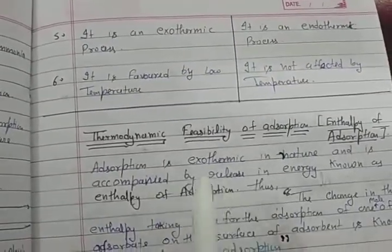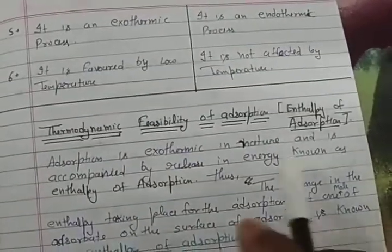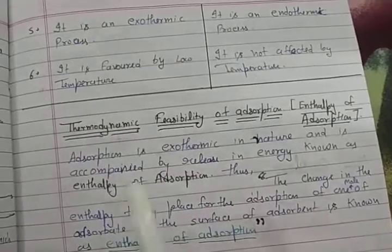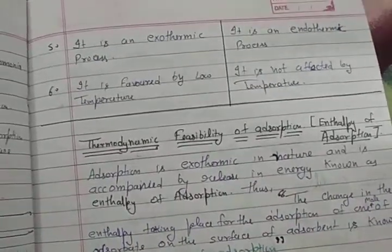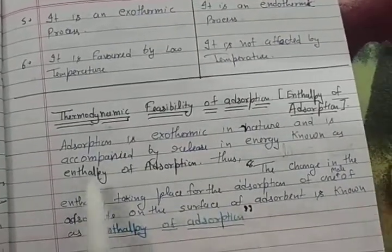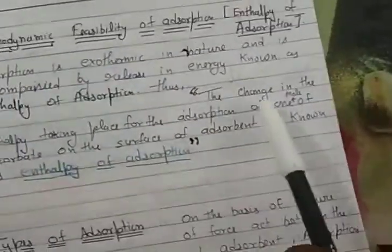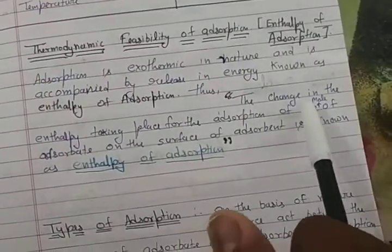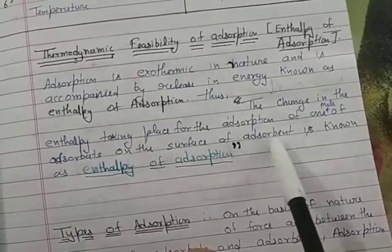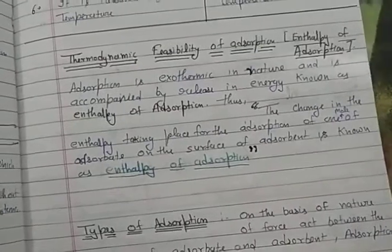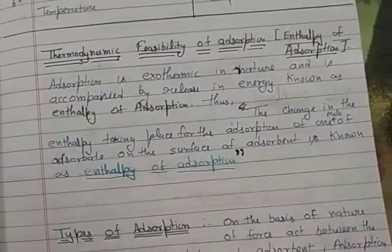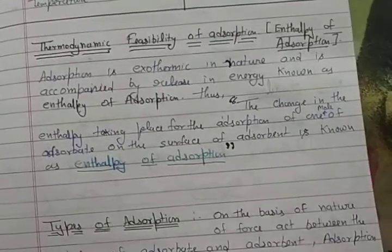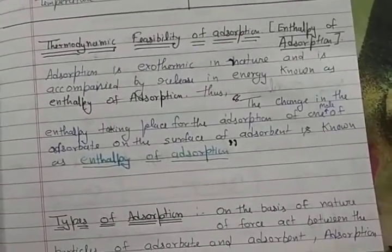Next topic: thermodynamic feasibility of adsorption — also called enthalpy of adsorption. Adsorption is exothermic in nature, meaning when adsorption occurs on the surface of any adsorbent, it releases some energy. This energy is called enthalpy of adsorption, defined as the change in enthalpy taking place for the adsorption of one mole of adsorbate on the surface of the adsorbent.